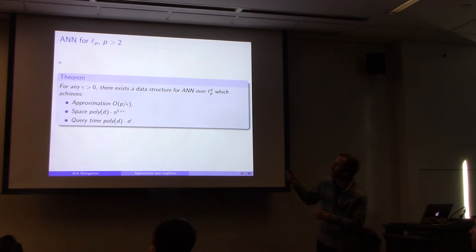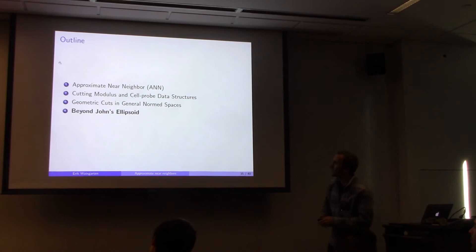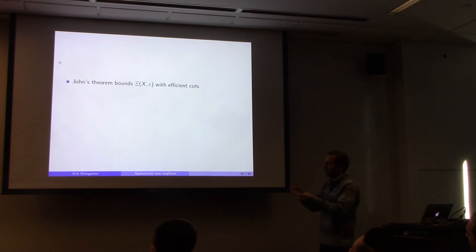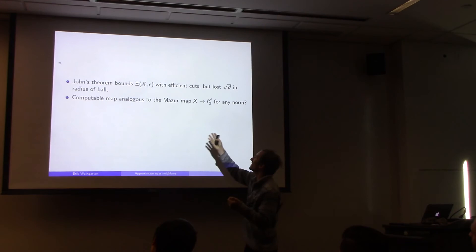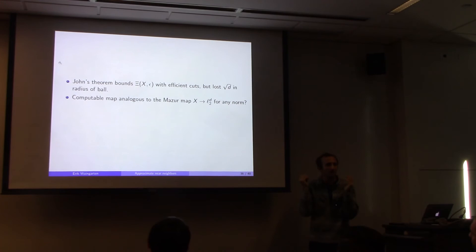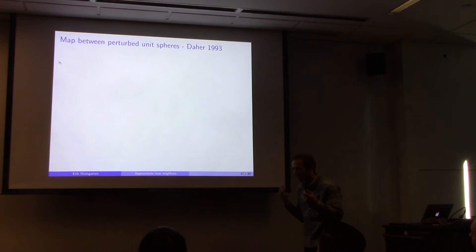The conclusion: for L_p norms, there exists a data structure using the cutting modulus framework where at each tree traversal step, there's an efficient way to decide which side of the cut a point belongs to — just apply the Maslow map, project to a coordinate, and check against a threshold. This gives an algorithm with approximation p/epsilon, space poly-d times n^{1+epsilon}, and query time poly-d times n^epsilon. Now we want to extend this to any norm.